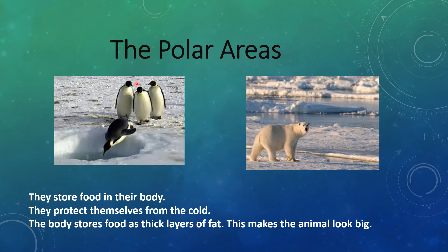Next, we will discuss about polar areas. The poles are covered with snow throughout the year and are the coldest places on earth. Food is also scarce. Animals living here need to store food in their body to protect themselves from the cold. The body stores food as a thick layer of fat, which makes the animals look big.